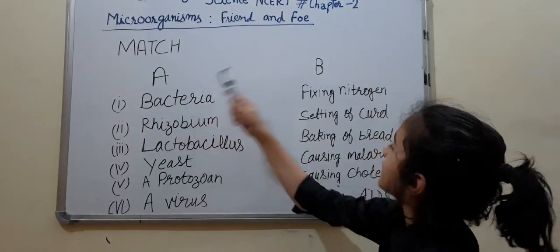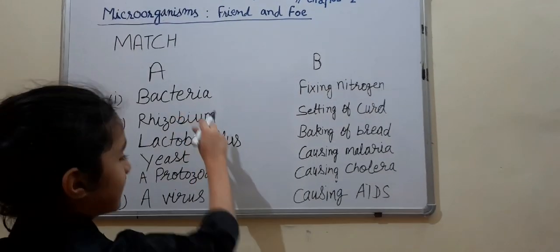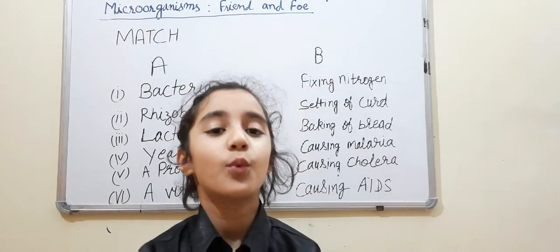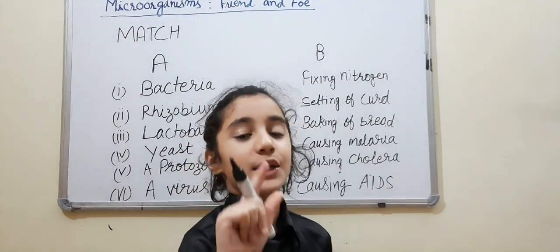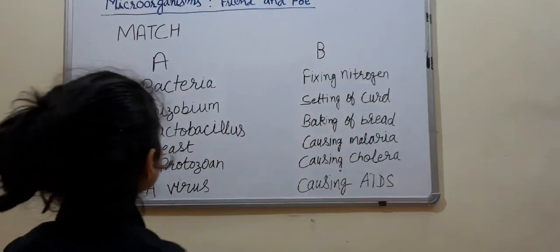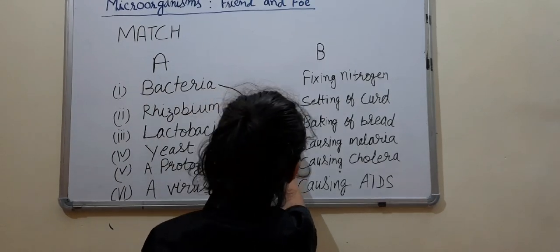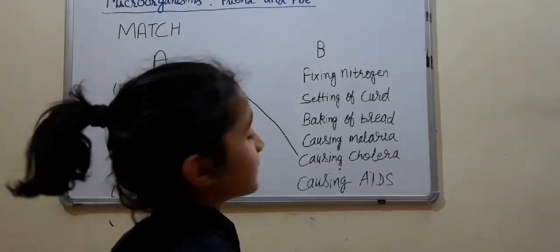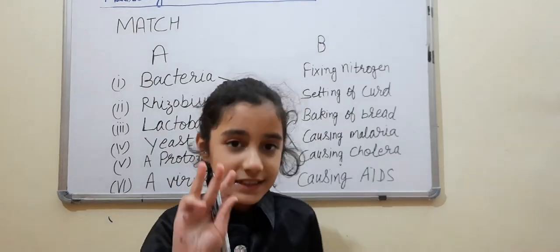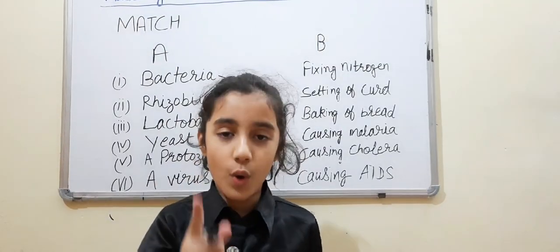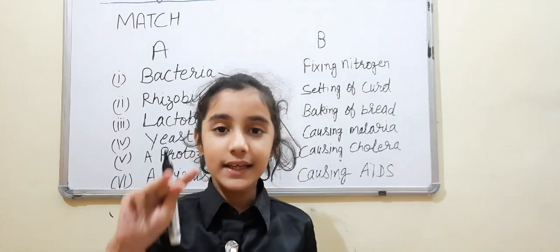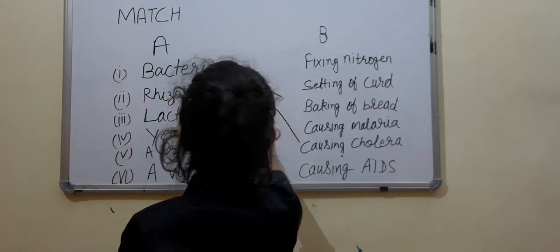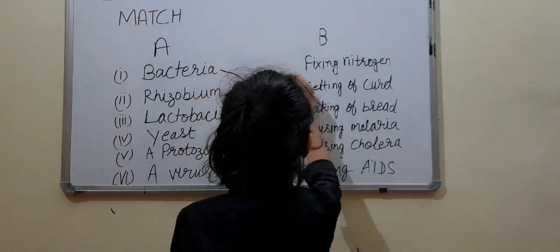Match column A with column B. Bacteria — what will match with bacteria? The right answer is causing cholera. Rhizobium — what will match with rhizobium? The right answer is fixing of nitrogen.